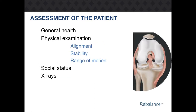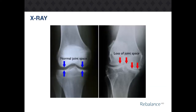Assessment of the patient is critical to determining whether knee replacement surgery is the ideal treatment option. Areas for assessment include the patient's general health, physical examination such as alignment, stability, and range of motion, the patient's social status, as well as x-rays. The x-ray on the left shows an anatomically healthy knee. The x-ray on the right shows a diseased knee joint with a lack of joint space and bone-on-bone articulation.